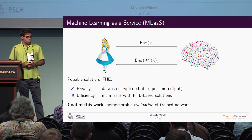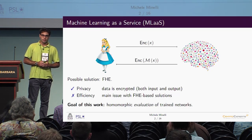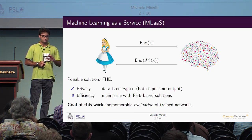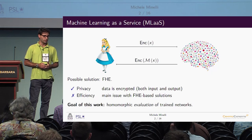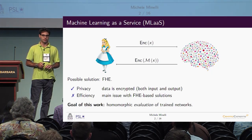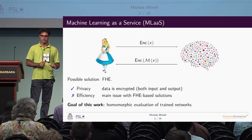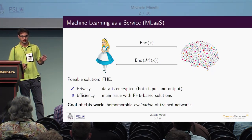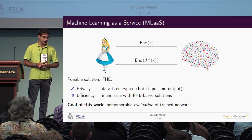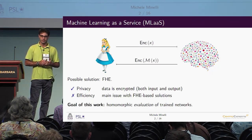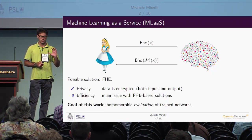The goal of this work is to evaluate neural networks homomorphically as efficiently as possible. We do not care about training from encrypted data — we assume that the model already exists and has already been trained. We assume the model is available in the clear, so the weights of the neural network will not be encrypted.